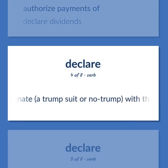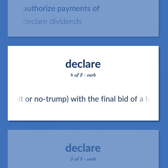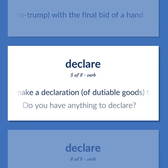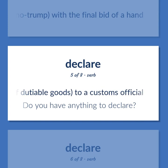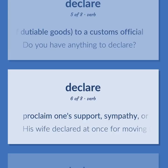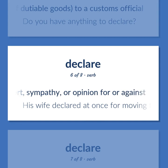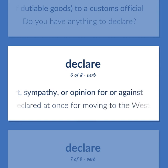DECLARE: Designate a trump suit or no trump with the final bid of a hand. Make a declaration of dutiable goods to a customs official — do you have anything to declare? Proclaim one's support, sympathy, or opinion for or against — his wife declared at once for moving to the West Coast.